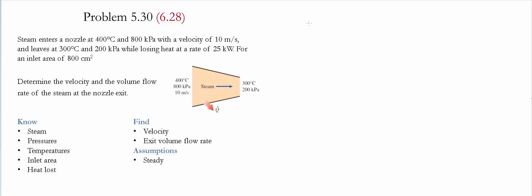To start this problem we're going to do a balance of energy in terms of rate of energies. We have the rate of energy entering the system minus the rate of energy leaving the system equal to the change of energy in the system. Since the system is steady, this quantity is equal to zero, therefore the rate of energy going in is equal to the rate of energy leaving.